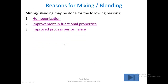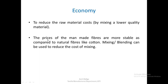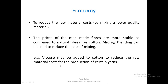The next reason is economy — to reduce raw material cost by mixing in a lower quality material. The prices of manmade fibers are more stable compared to natural fibers like cotton, because cotton depends on environmental conditions and therefore its prices fluctuate. Manmade fibers are comparatively more stable. For example, viscose may be added to cotton to reduce raw material costs for the production of certain yarns, as viscose being a regenerated fiber can bring down material costs.